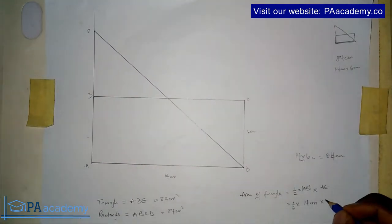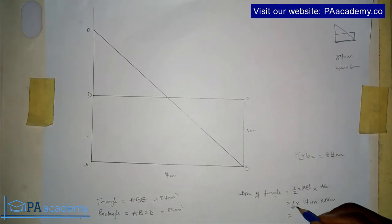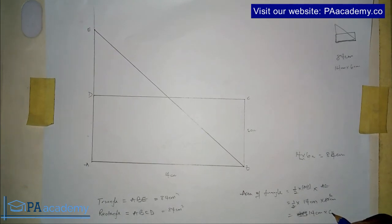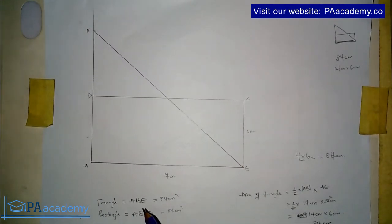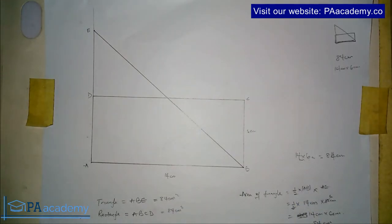So doing this we have 14 divided by 2 will give us 7, and with that we'll be left with 7 times 12 centimeters, and that will give us 84 cm². So that's just to confirm to you that the area of the triangle and the area of the rectangle are the same.